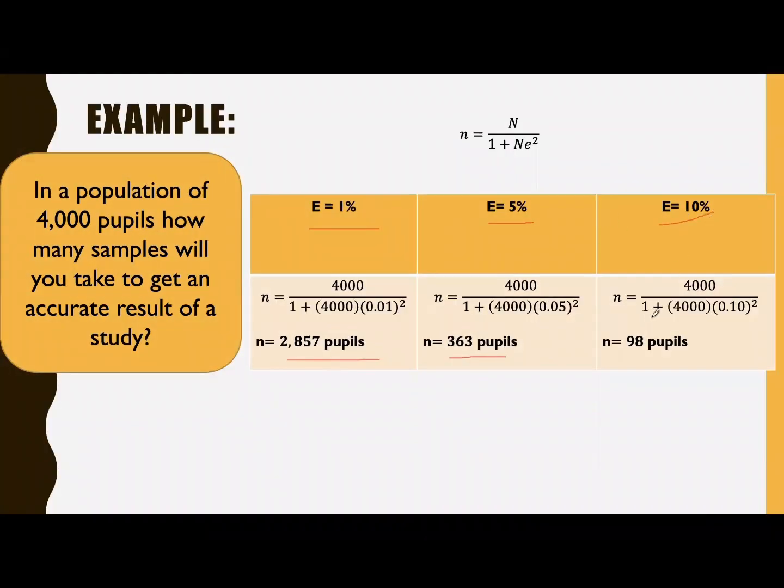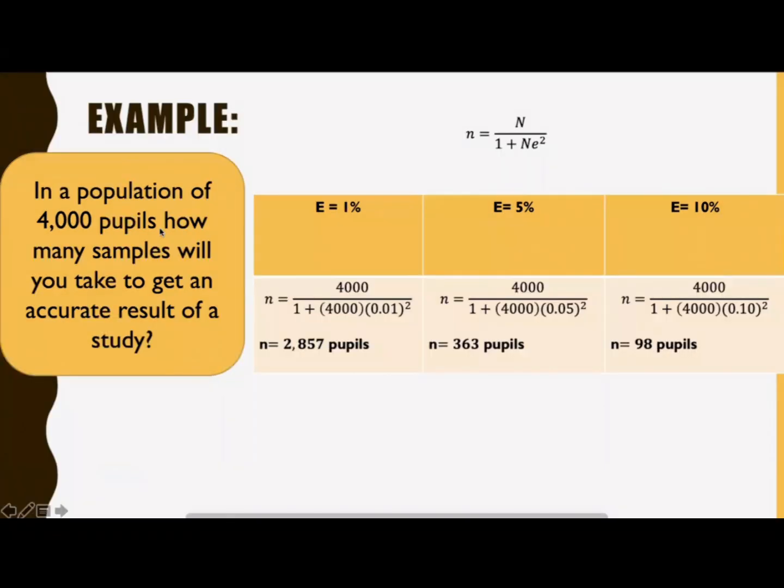If the margin of error is 5%, substitute in the formula. You have 4,000 divided by 1 plus 4,000 times 0.05 squared. The answer is 363 pupils.